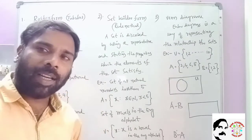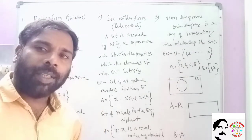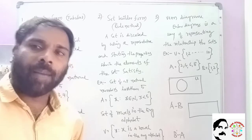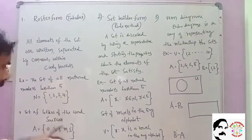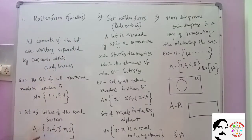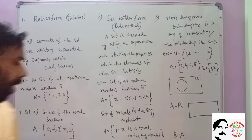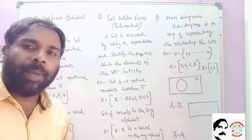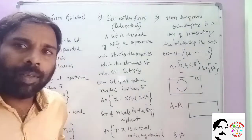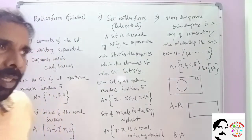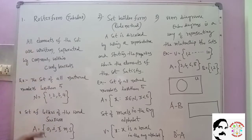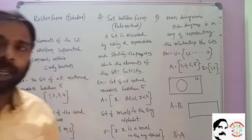The distinct letters of the word Sairam are S, A, I, R, M. So the set is {A, I, R, M, S}. We do not repeat letters. The Roaster Form of Sairam is {A, I, R, M, S}.